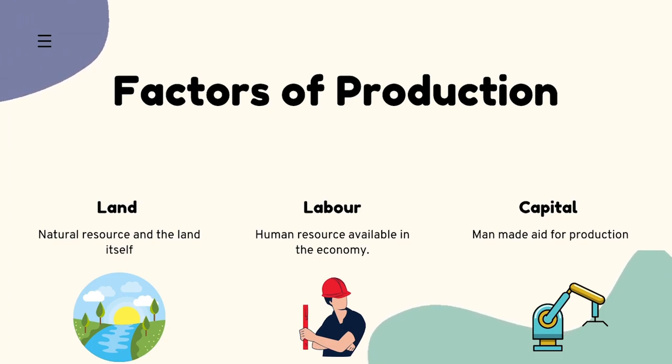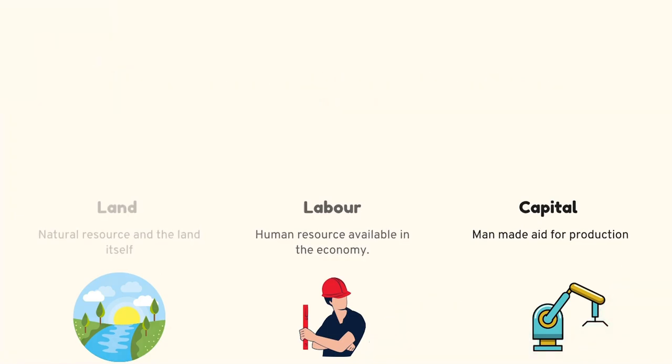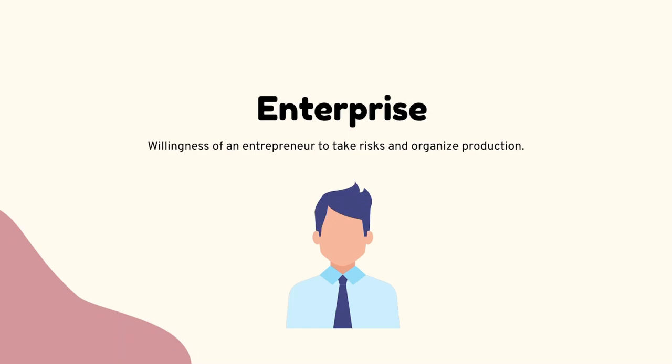Capital is man-made aid for production, which includes machinery used to produce other goods. The fourth factor is enterprise — this is the willingness of an entrepreneur to take risks and organize production. Entrepreneurs are the ones starting up businesses and taking risks to produce goods and services to satisfy the unlimited wants of people.